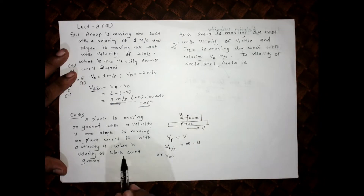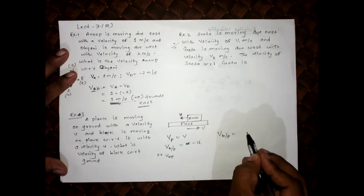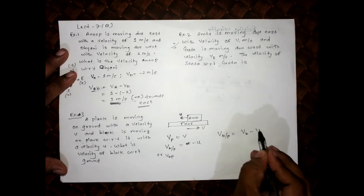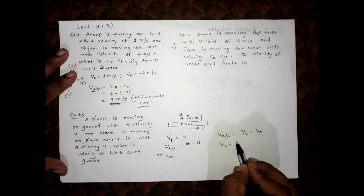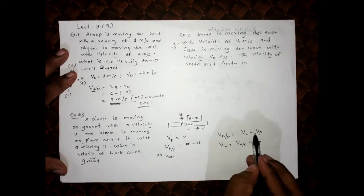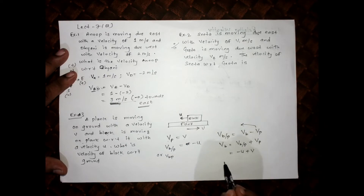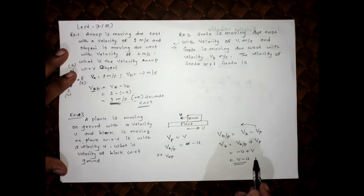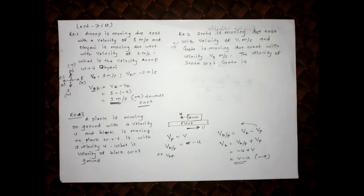We need to find the velocity of the block with respect to ground. Velocity of block with respect to plank equals velocity of block minus velocity of plank. So velocity of block equals velocity of block with respect to plank plus velocity of plank, which is (−U) + V = V minus U. The block moves in the direction of the plank — easy question.